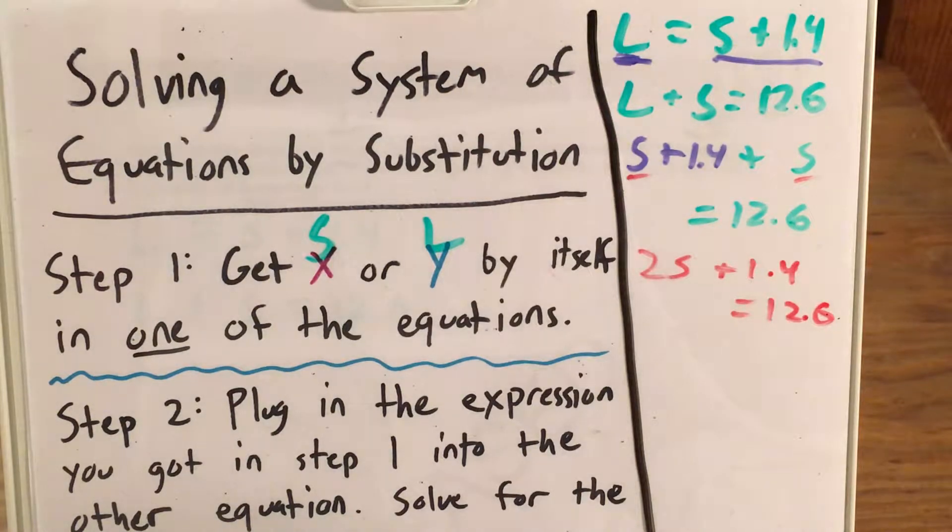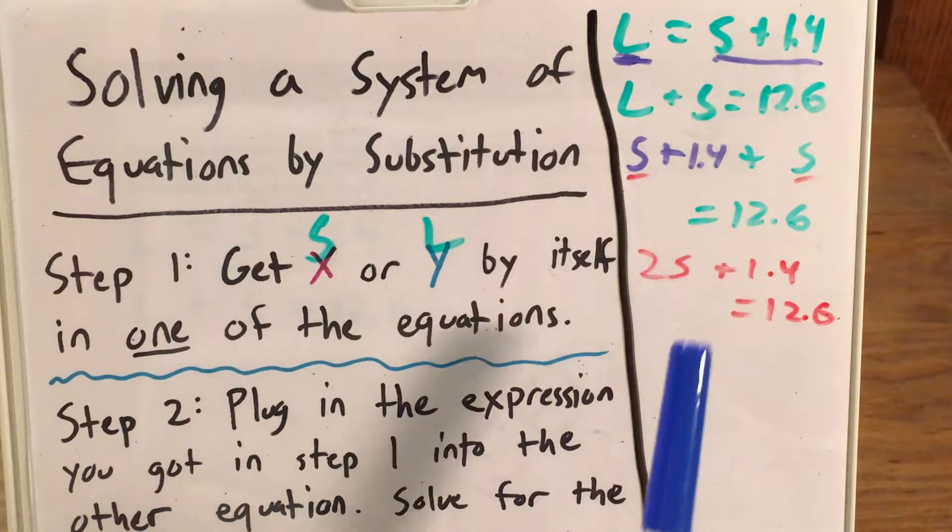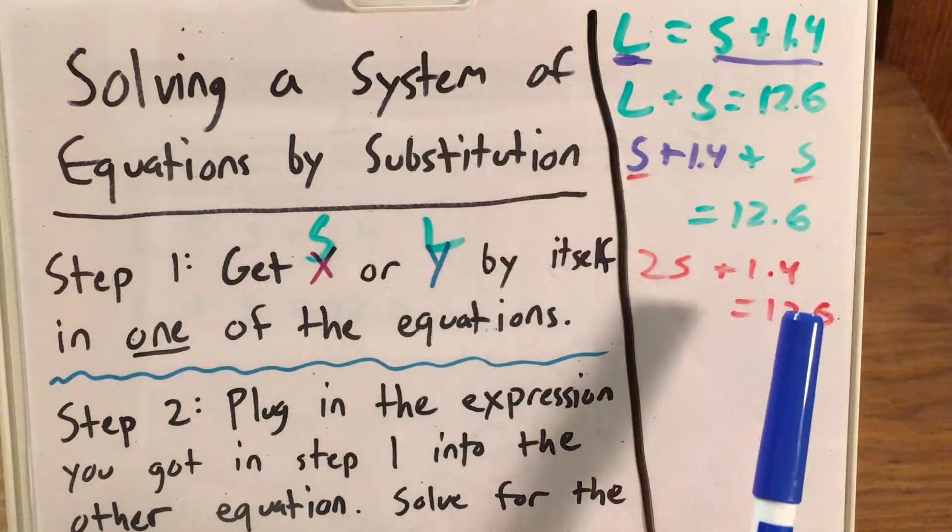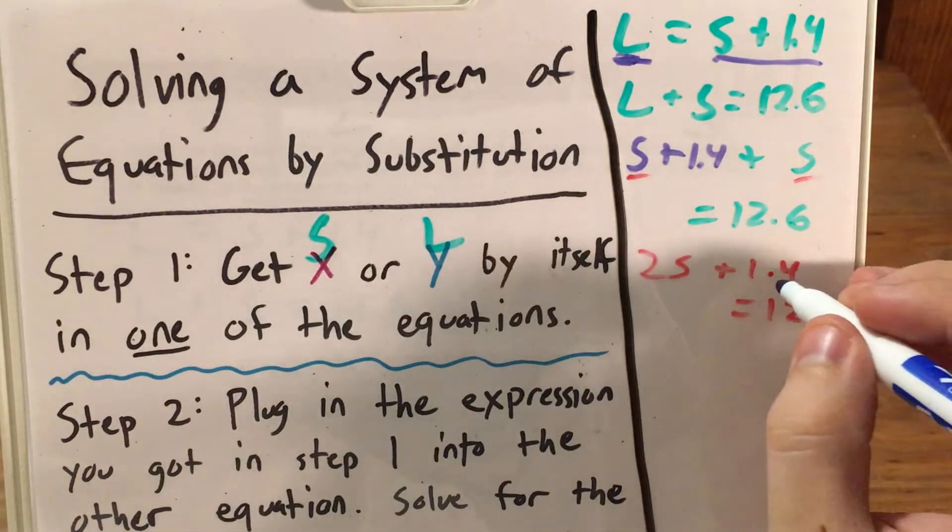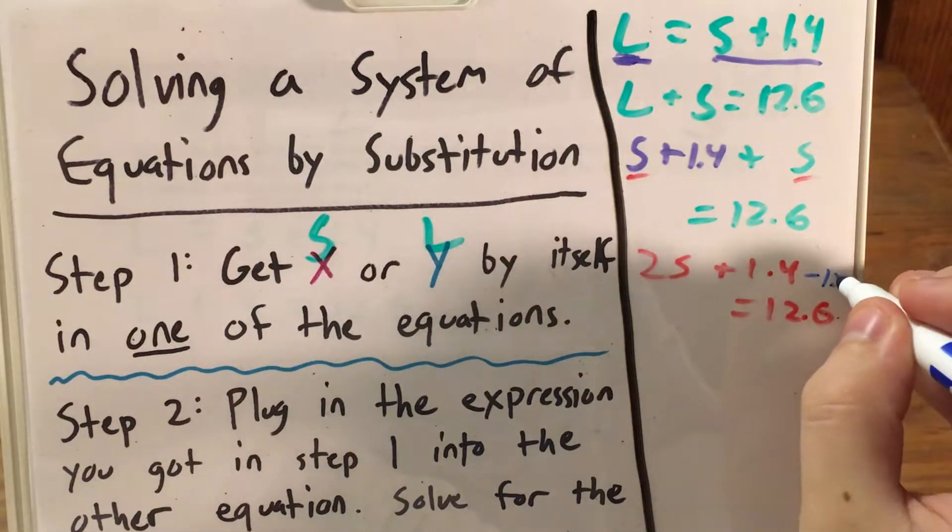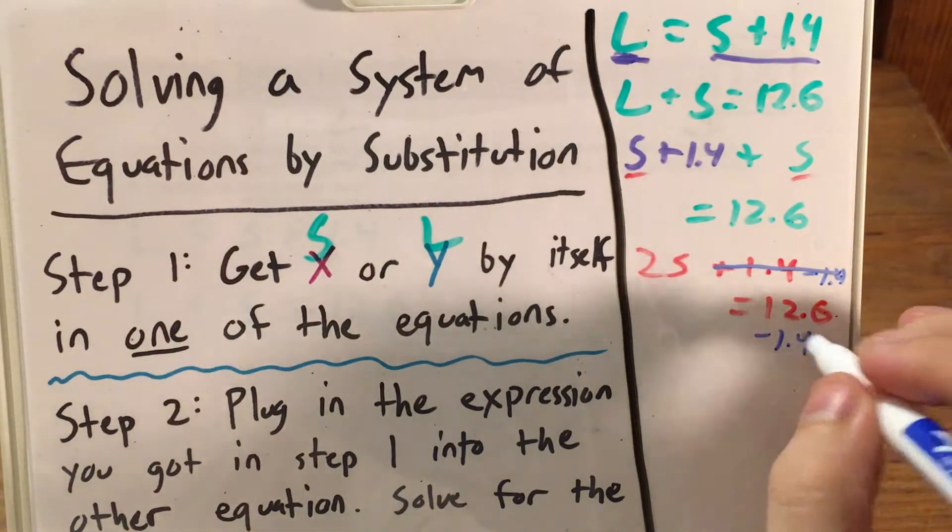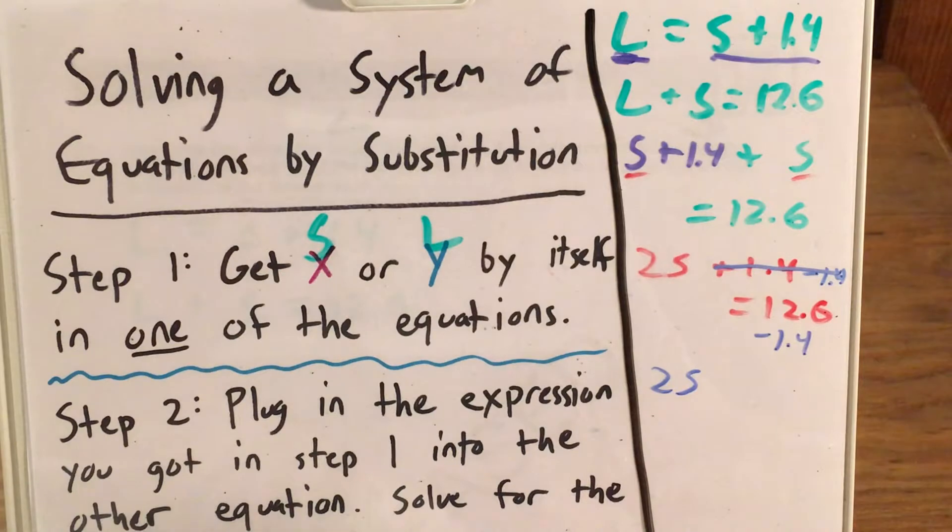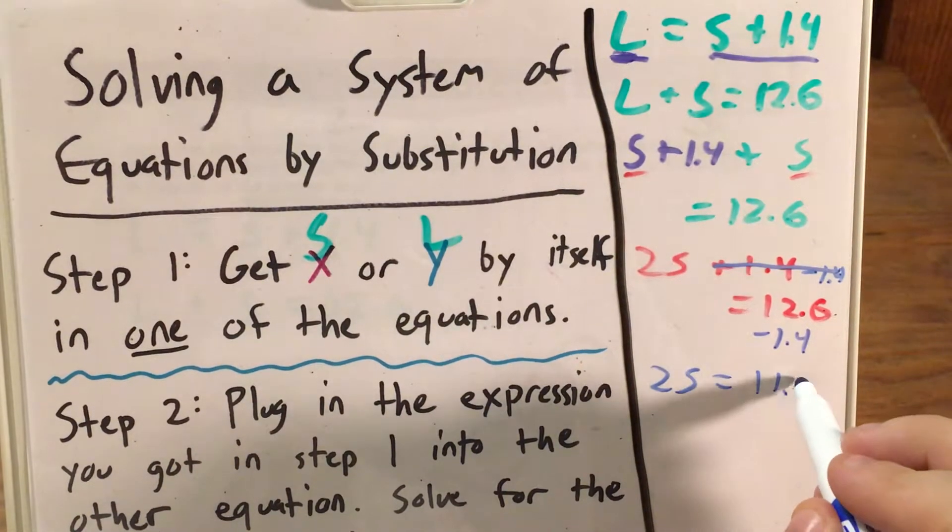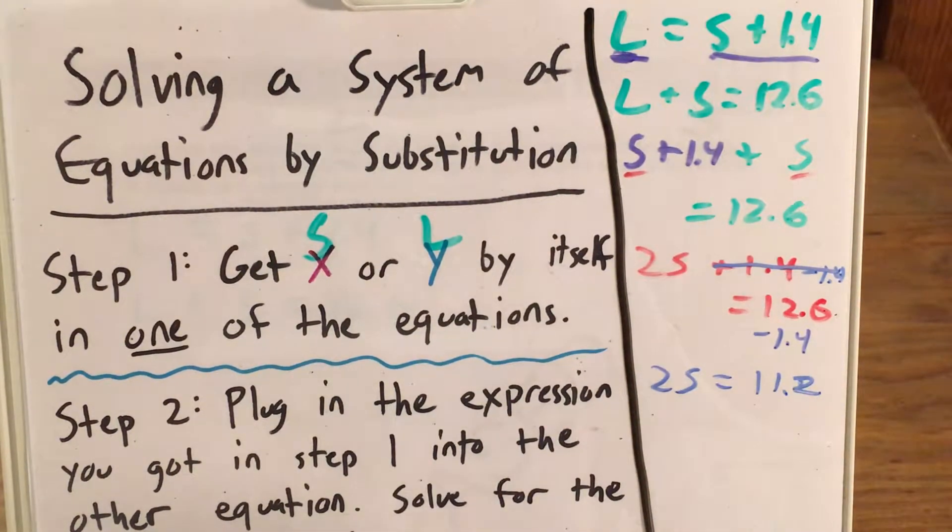Now I just need to treat this like a regular two-step equation. I can't get rid of this two before, well I can, but it's easier to get rid of the 1.4 first. So I subtract 1.4 and these cancel. Subtract 1.4 and I get the weight of two small dogs is going to equal 11.2.